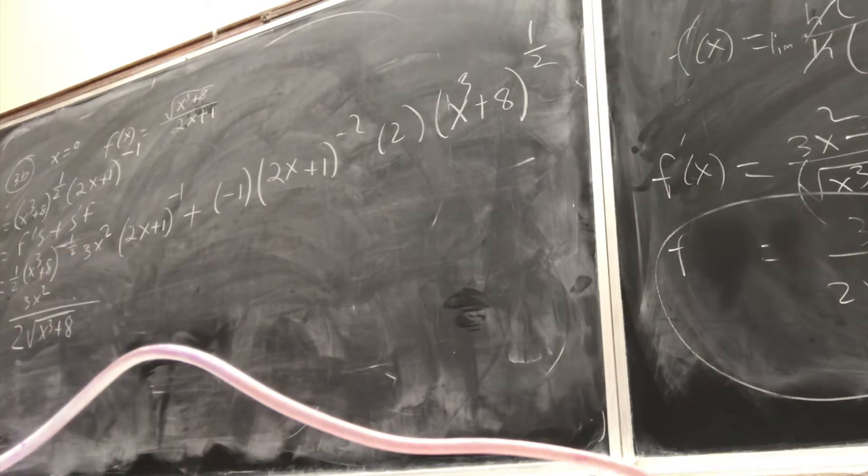3x squared. What about this guy? On the bottom. And how am I going to write that? 2x plus 1. I'm going to write plus or minus? Minus.